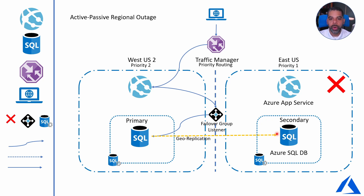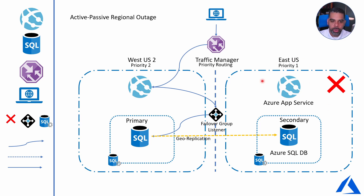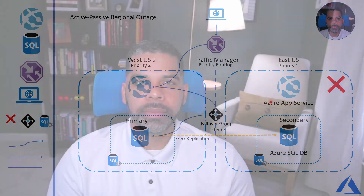This is our last architecture scenario: an entire region outage. East US is down — we are not able to reach either our App Services or our database. All of the traffic has moved over to the West US region. Traffic Manager has done that priority routing and failed over to West US on the web side, and our failover group listener on the SQL side has also failed over the database to West US as primary. Our users are still up and leveraging the application. Once East comes back up, things will reset — you can fail the database back over and Traffic Manager will start rerouting to priority one. That's been a look at how we set up our application in Azure, how it functions, and how failover occurs. Next, we're going to dig into deploying a web application, creating our App Service and SQL Database environments, setting up the failover, and testing it.